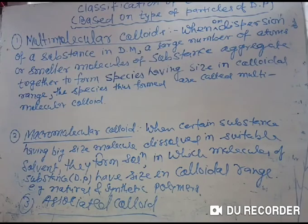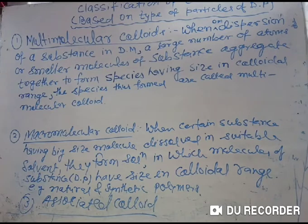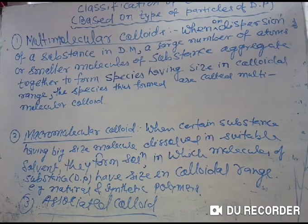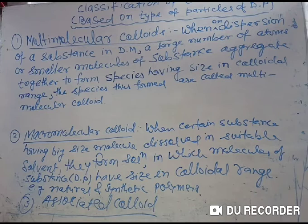Good evening students. In this video, we will discuss the classifications of colloids on the basis of the type of particles of dispersed phase, means the nature of the particles of dispersed phase. In the last two videos, you have seen the classifications on the basis of the physical state of dispersed phase and dispersion medium, and on the basis of the nature of interactions between the dispersed phase and dispersion medium. Today we will discuss classification on the basis of the type of particles of dispersed phase.